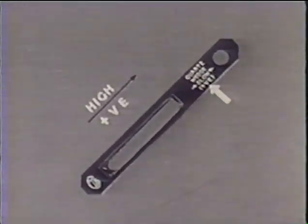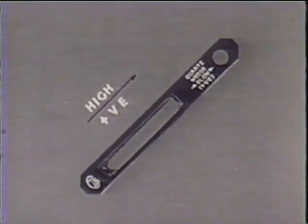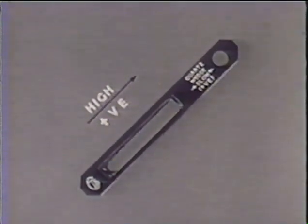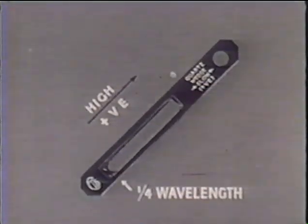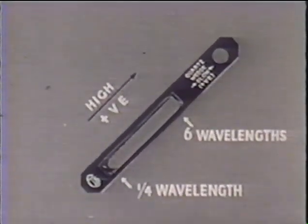Quartz wedges are very shallow and thin. Their retardation at the thinnest end is about one quarter wave and it increases uniformly to about six wavelengths at the thick end.